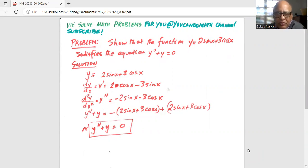Now y = 2sin(x) + 3cos(x). So dy/dx, which is the first derivative of y with respect to x, is y' = 2cos(x) - 3sin(x).